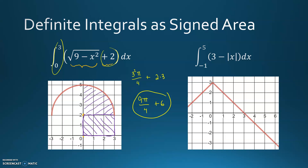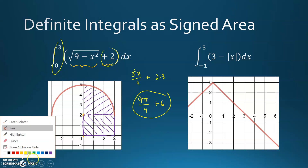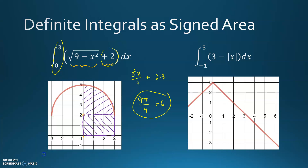For the second integral, I'm looking at the area between negative 1 and 5. Part of it is above the x-axis, and then there's a triangle below the x-axis. This is a 2 by 2 triangle, so it has an area of 2, but since it's below the x-axis, its signed area would be negative 2.